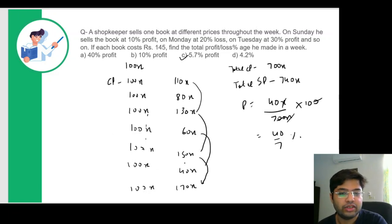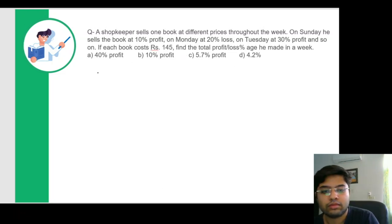Now what we've done here, we can also generalize this. So I'm going to rub this and then I'm going to tell you the general formula for such questions. So as a general rule for solving such questions in which suppose you're given a common cost price for multiple objects.